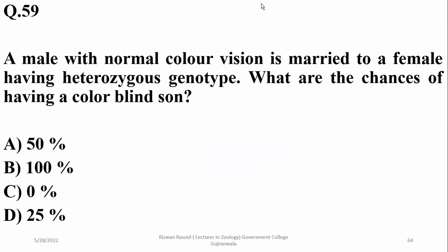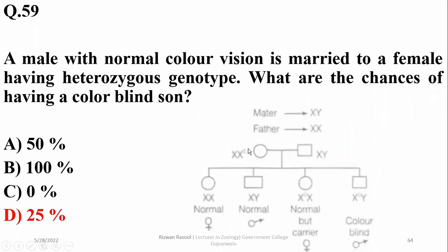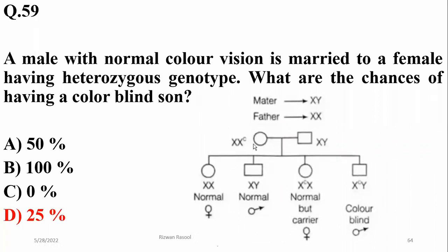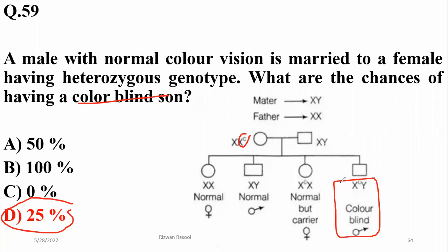A male with normal color vision (capital C and Y) is married to a female having heterozygous condition. What are the chances of having a colorblind son? The right option is 25%, as you can see from the crossover. Capital C is present; the colorblind allele is small c. Out of two chances, the overall colorblind son probability is 25%. If considering only sons, it would be 50%, but the right option for all children is 25%.